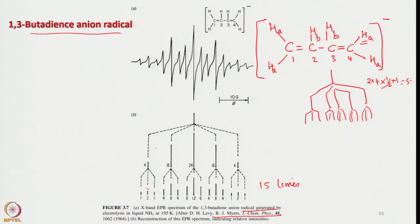From one of the old Journal of Chemical Physics papers: initially it splits with 4 equivalent hydrogen atoms to give a quintet, and then each line is further coupled with the two equivalent HB protons to give a triplet — resulting in triplets of quintet, or we can call it a quintet of triplets.